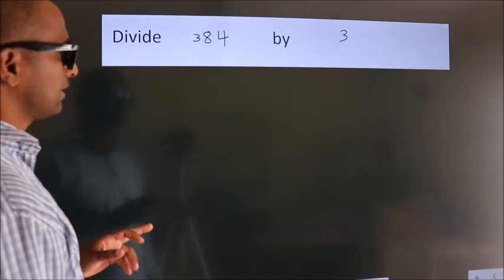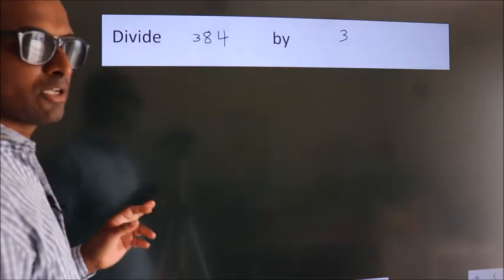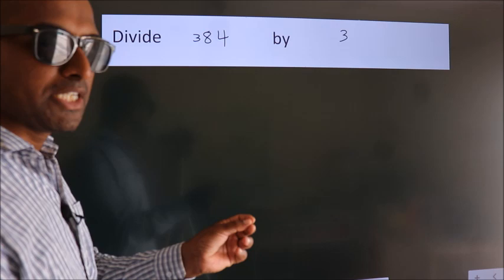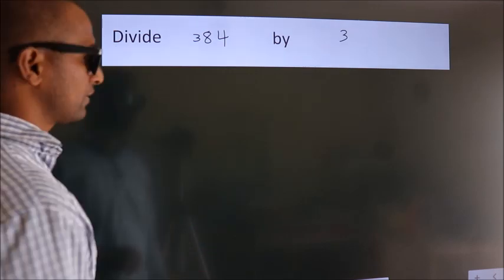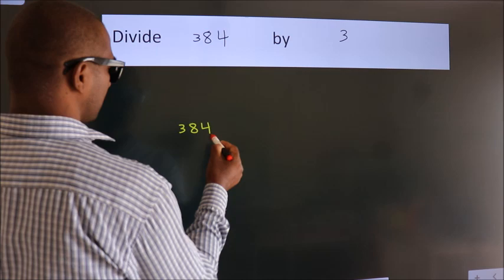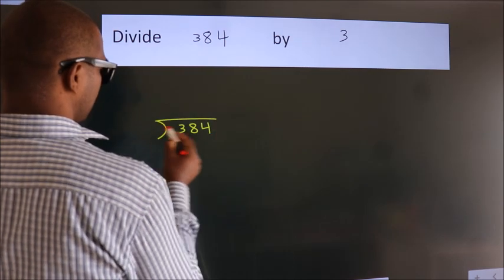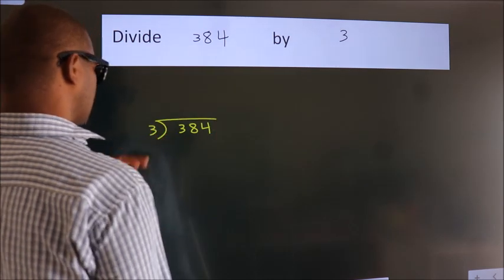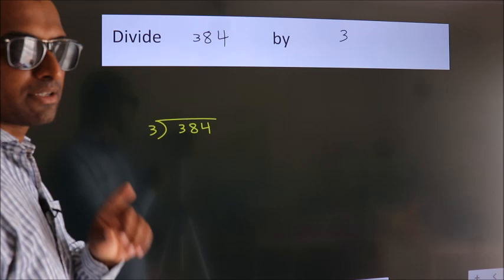Divide 384 by 3. To do this division we should frame it in this way. 384 here, 3 here. This is your step 1.